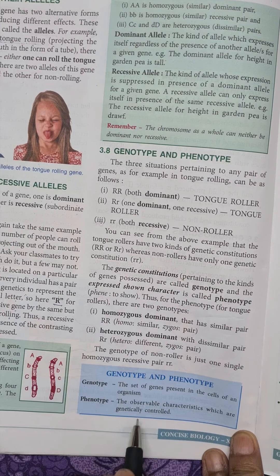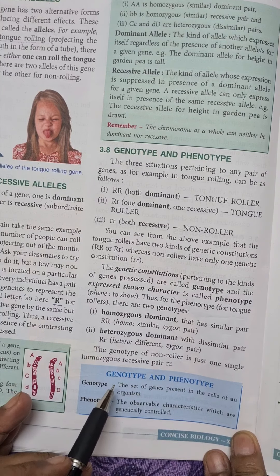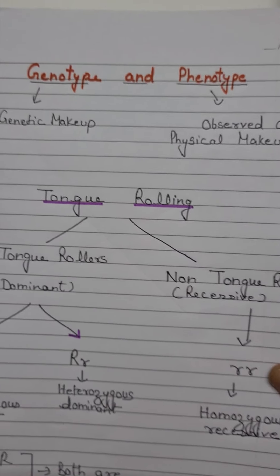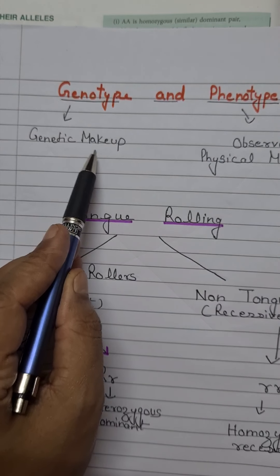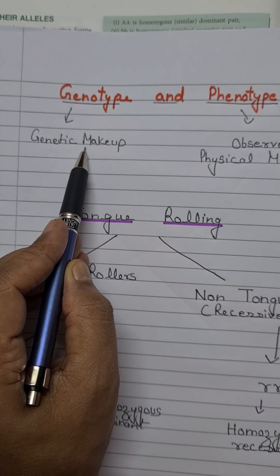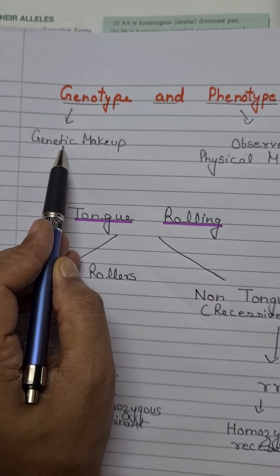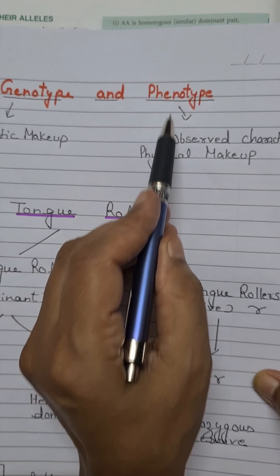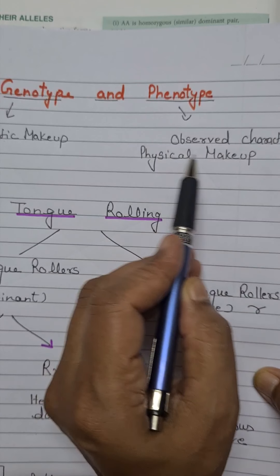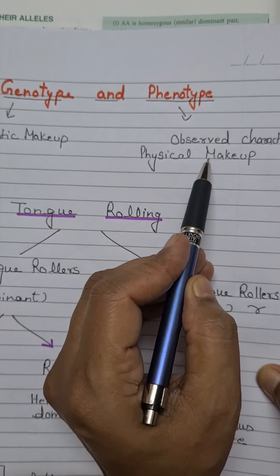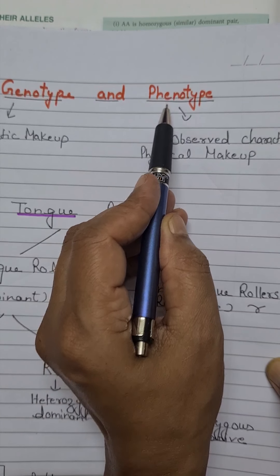To explain these two terms with the example of tongue rolling: genotype is the genetic makeup of an organism — what types of genes are controlling the two traits of a character. That is the genotype of the organism. Phenotype is the observed characteristic of an organism — the physical makeup, or which characteristics are expressed and how the organism looks.